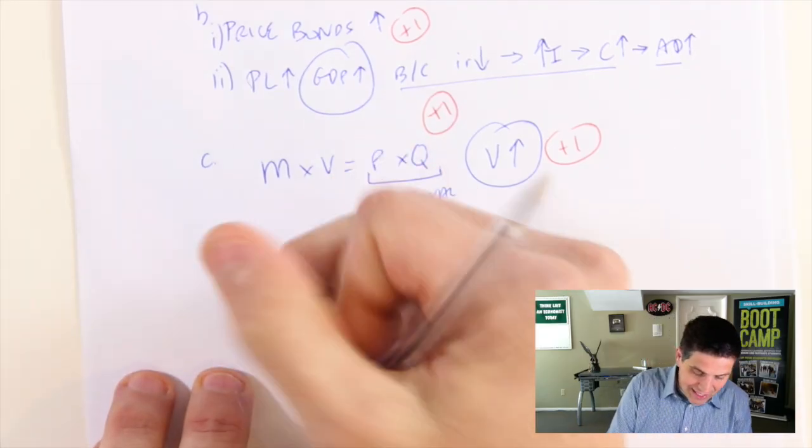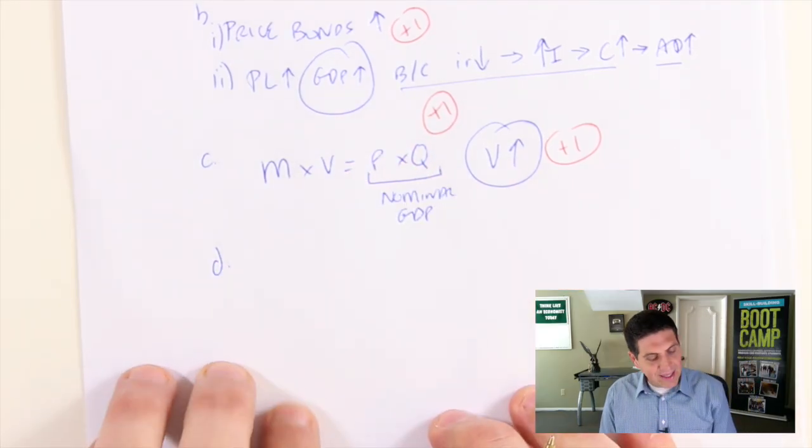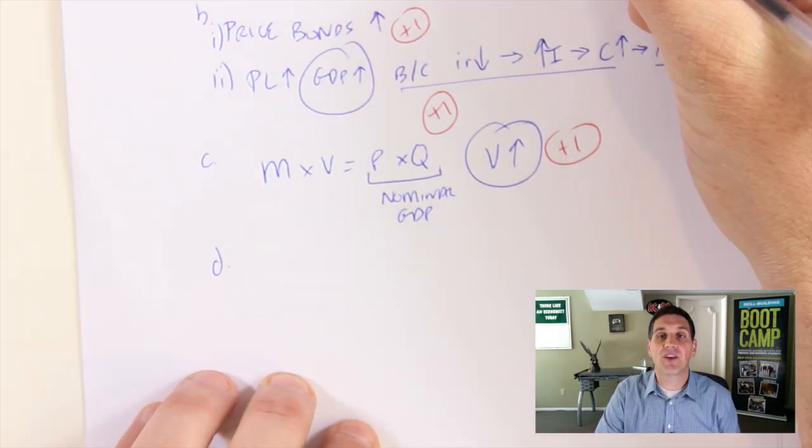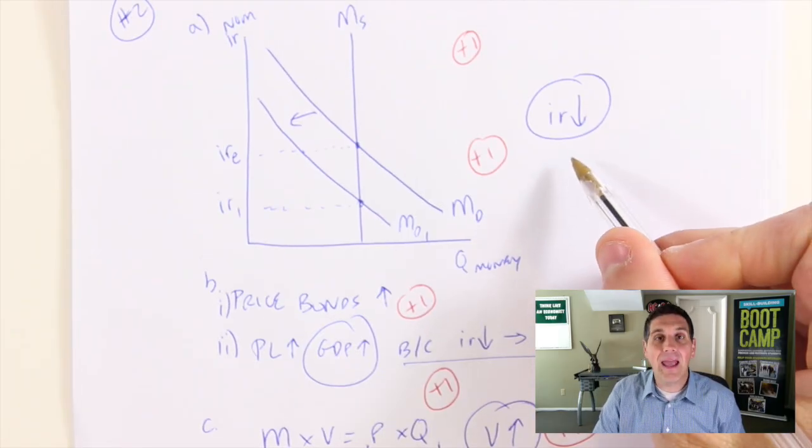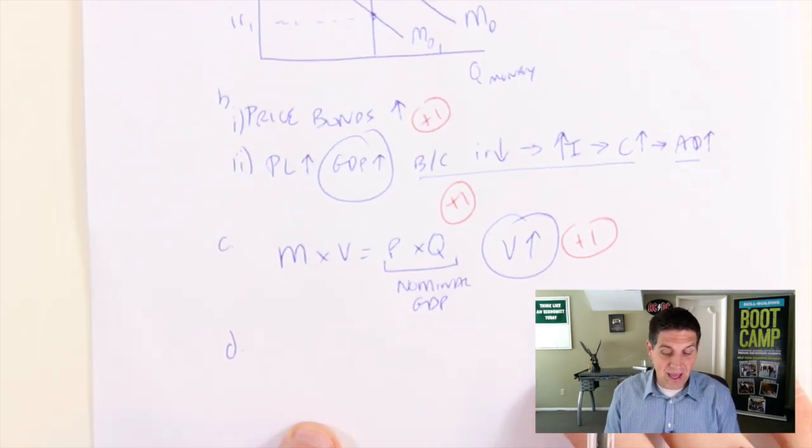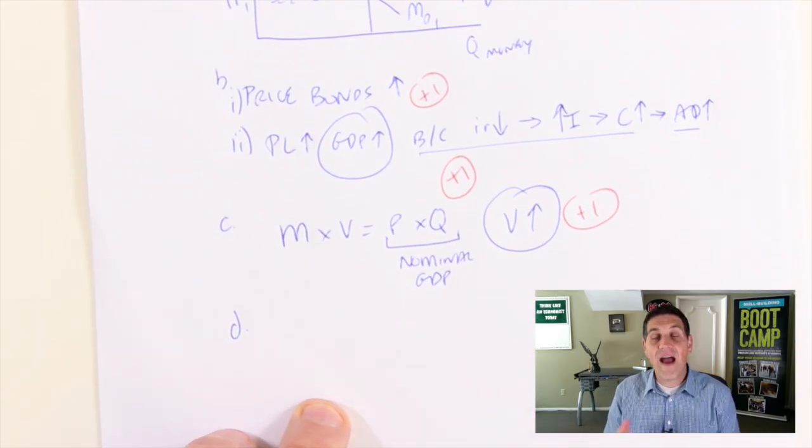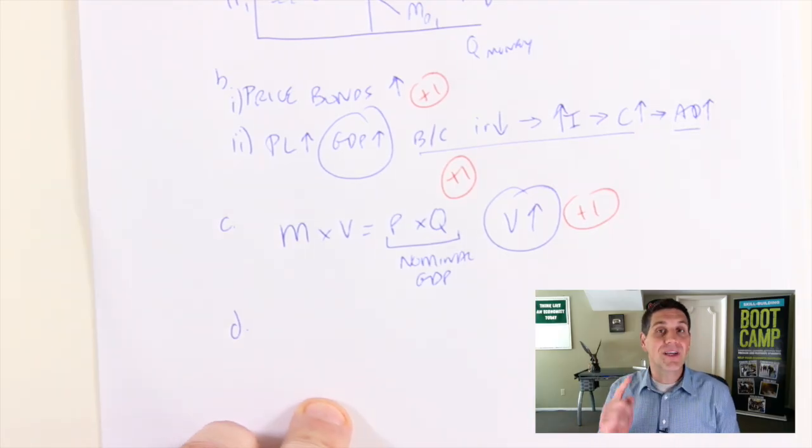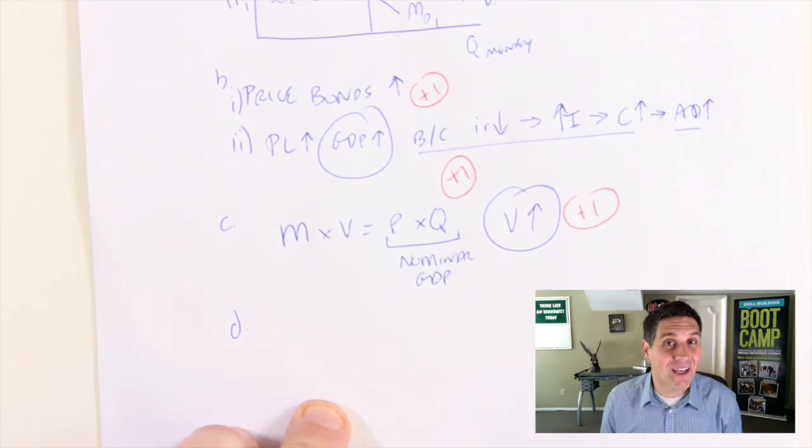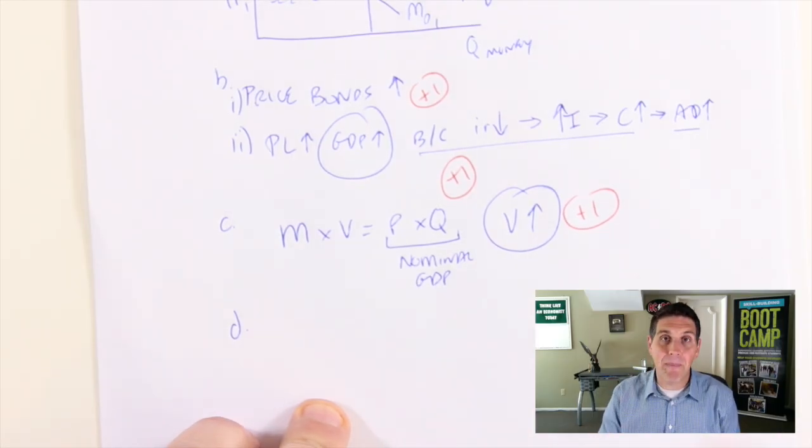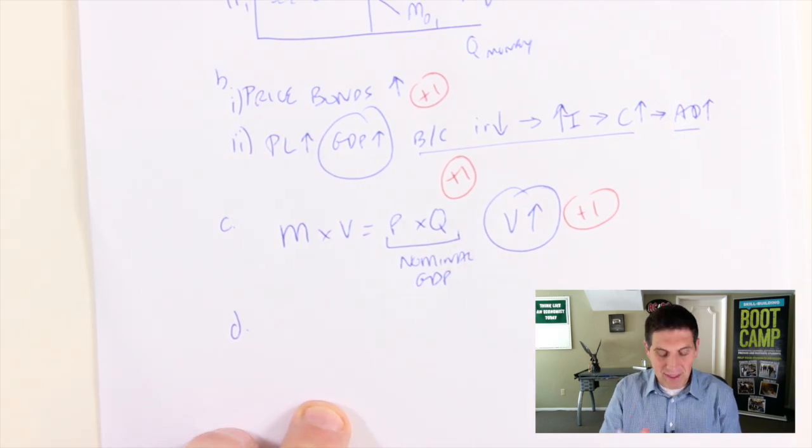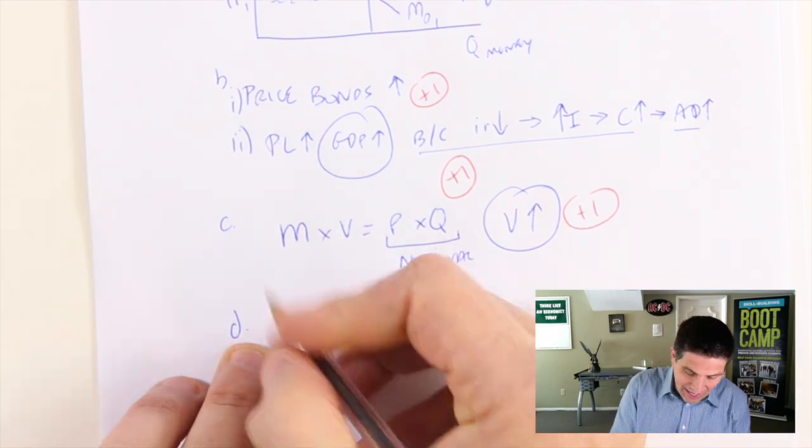Now the last question, part D. It asks what the central bank can do to reverse the interest rate change from part A. Interest rates went down, according to the graph. How can the central bank fight that and get interest rates back up? They specifically ask what open market operation can be used. This is about the Fed or central bank buying and selling bonds.